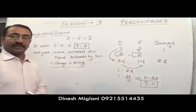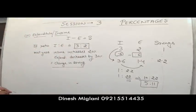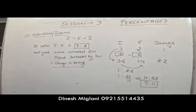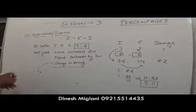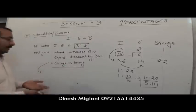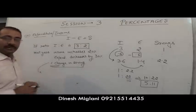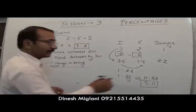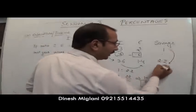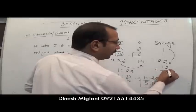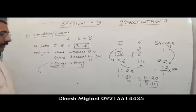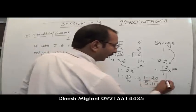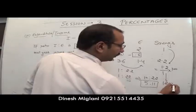If we have to find the percentage change in savings: the change is 1.2 on an original value of 1. So percentage change = 1.2/1 × 100 = 120%. The answer is 120% increase in savings.